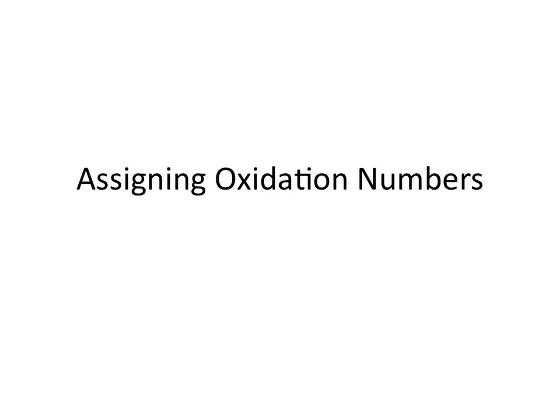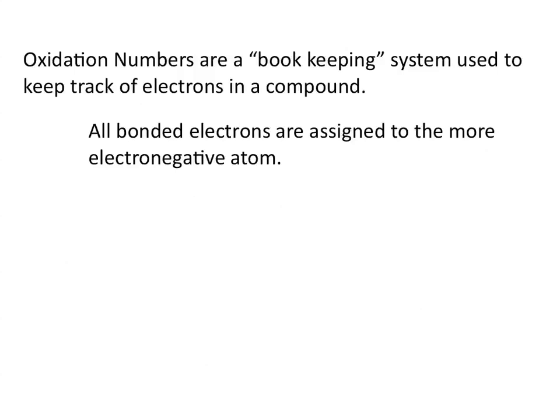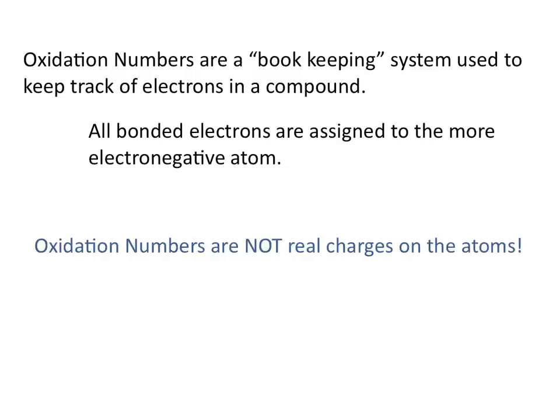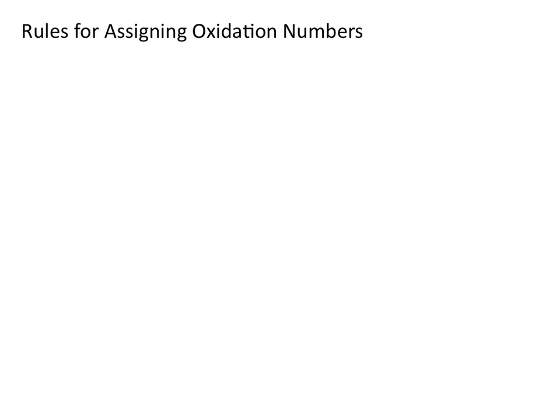Hello and welcome to the chemistry solution. This tutorial is on assigning oxidation numbers. Oxidation numbers are a bookkeeping system used to keep track of electrons in a compound. All bonded electrons are assigned to the more electronegative atom. Remember that oxidation numbers are not real charges on the atoms. Let's go over some rules for assigning oxidation numbers.